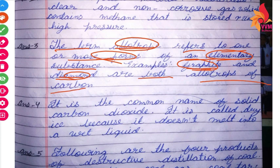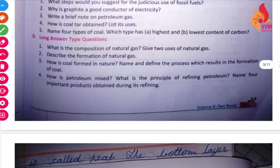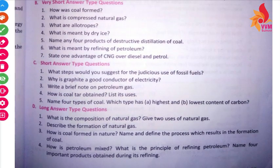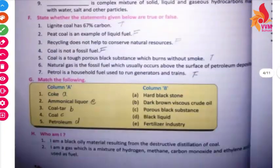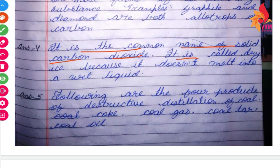Our next question is: what is meant by dry ice? What is the common name of solid carbon dioxide? It is called dry ice because it doesn't melt into a wet liquid.